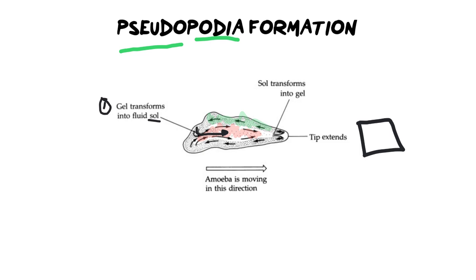Because this is happening all the way around the edge, you get a part of our protist that is weakened, and that's where the tip extends. All of this sol — the liquid cytoplasm — is running forward. It's liquidy, and all the gel is moving out of the way, so the tip extends and it creates a false foot or pseudopodia. Then the liquid can't just run straight — we need to form an actual foot. So as the liquid reaches the edge, it becomes a gel again on the edges, turns backwards, and becomes a more jelly-like substance.